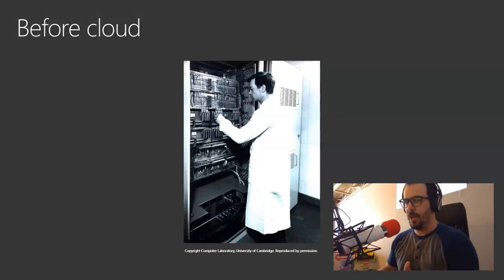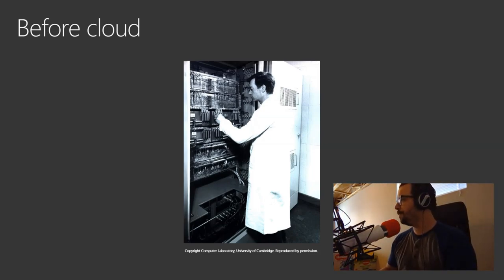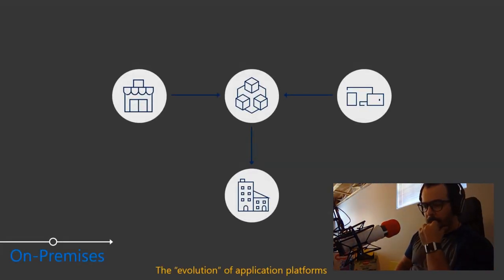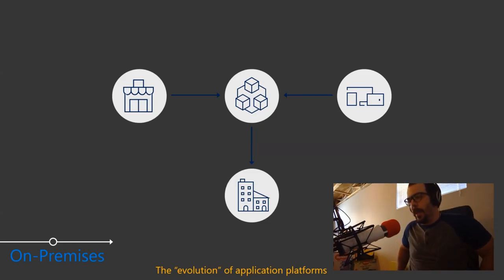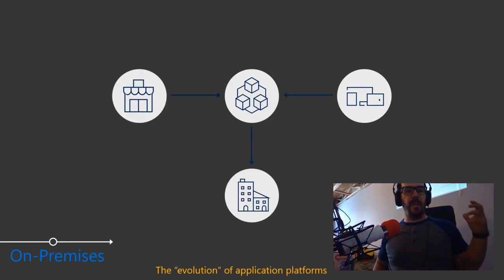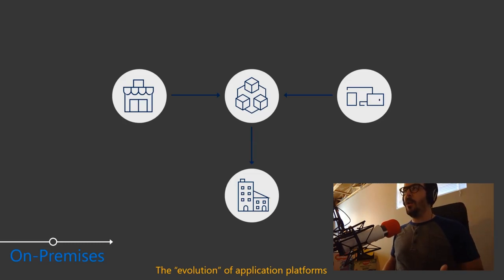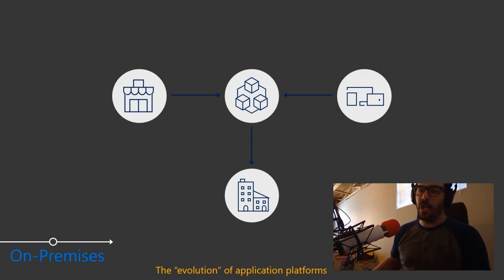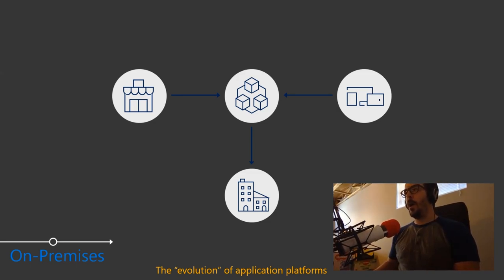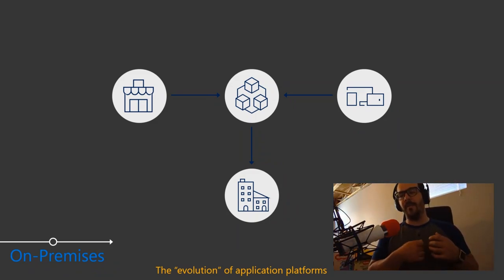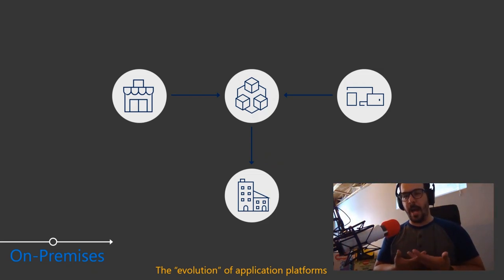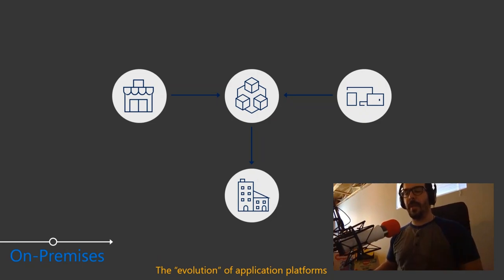The type of application we have now has really evolved. One of the first things you do when hosting a retail application or your own project is host it on what we call an on-premises server — literally running on a physical machine. You take a tower computer, install Windows or Linux, configure an Apache or IIS server, install the right libraries, and host your application. This is on-premises.